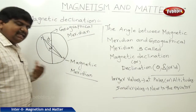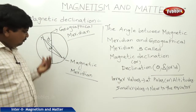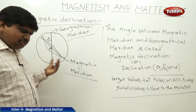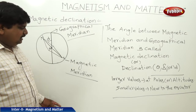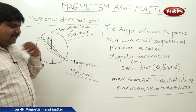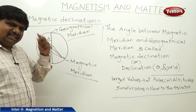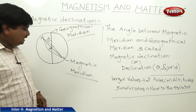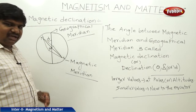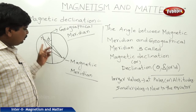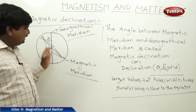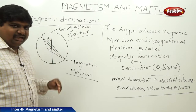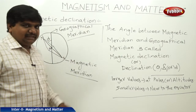Our Indian country is almost close to the equator. That is why the magnetic declination value here is very less, and we can expect the true north and south of the magnetic and geographic meridian to nearly coincide in India.